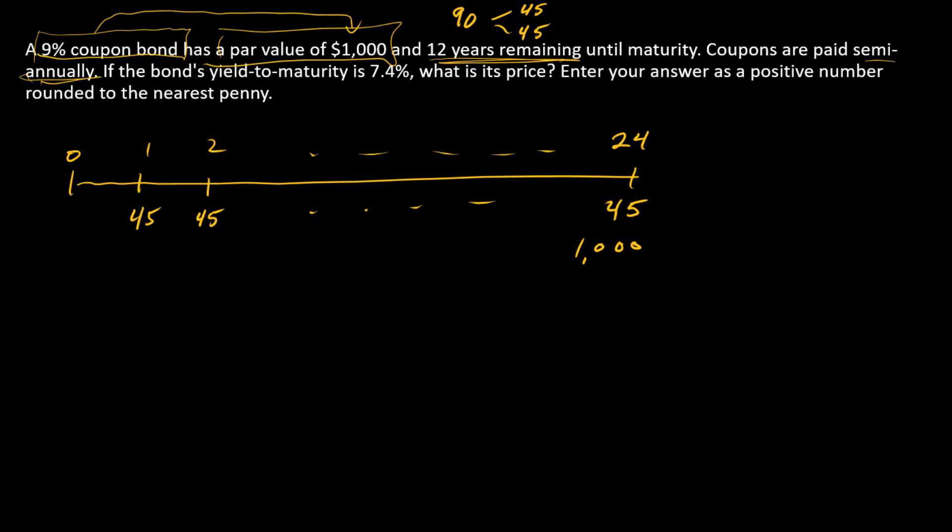And so we know that the price should be the present value of these cash flows, and we see we have an annuity and a single cash flow, and so we're just going to add the present values together.